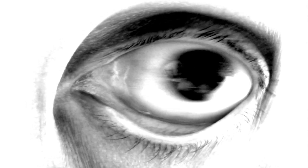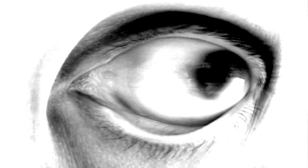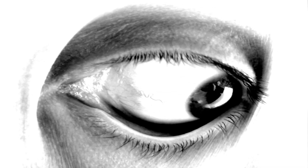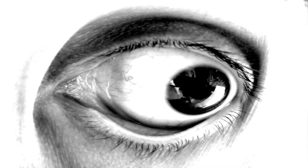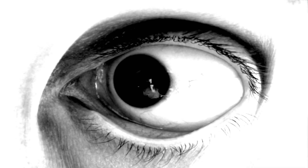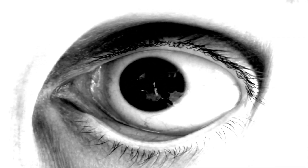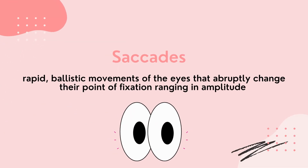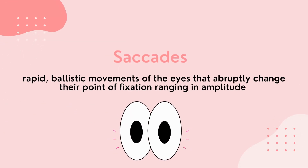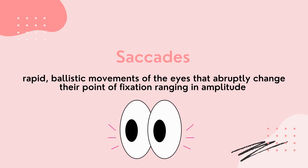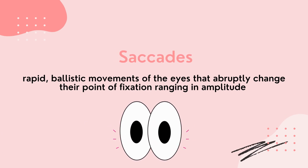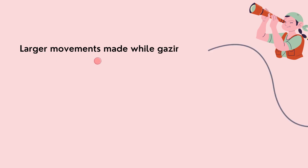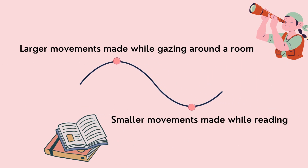In early EMDR treatments, Shapiro intentionally reproduced saccadic eye movements, with patients instructed to shift their gaze back and forth between two fingers held up in front of the patient on either side of the midline, or with extremely rapid contralateral movements. Saccades are rapid ballistic movements that abruptly change the eye's point of fixation, and these movements can differ in amplitude — ranging from smaller movements like those made when reading a book, to larger movements like when you look around the room.